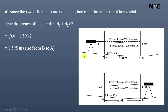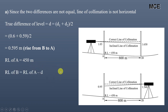Looking at the readings, staff reading at B is greater than staff reading at A in both cases. This means station B is at a lower reduced level than station A — there is a rise from B to A or a fall from A to B. Since the reduced level of A is 450 m, the reduced level of B = 450 − 0.595 = 449.405 m. This is the true reduced level of station B.